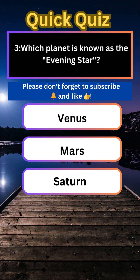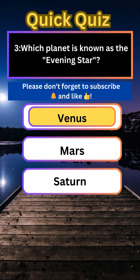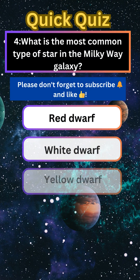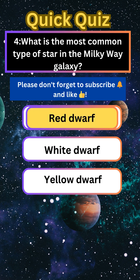Which planet is known as the evening star? Venus. What is the most common type of star in the Milky Way galaxy? Red dwarf.